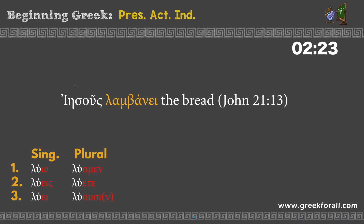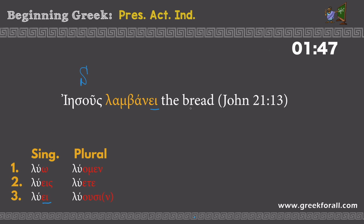A beautiful example from the Gospel of John: 'Iesous lambanei ton arton.' So 'Iesous' means Jesus and is our subject. We look at the endings of 'lambanei' and see the ending -ei — third person singular, meaning 'he takes.' 'Lambano' means 'I take,' so 'lambanei' means 'he takes.' And because we have a subject, we translate: 'Jesus takes the bread.'